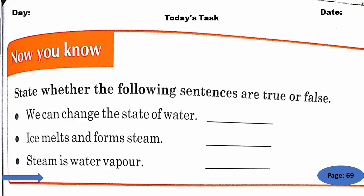See this activity — 'Now you know.' State whether the following sentences are true or false. Number one: we can change the state of water. Obviously students, the state of water can be changed, so it's true. Number two: ice melts and forms steam. No students, ice melts and forms water, so it's false. Number three: steam is water vapor. Obviously students, steam is water vapor — it's true.